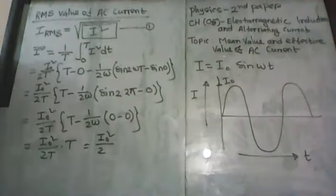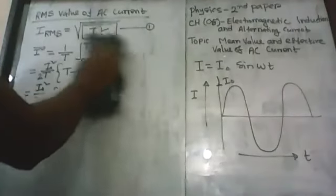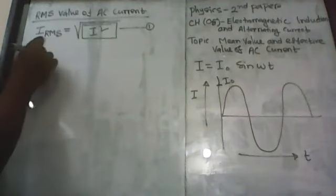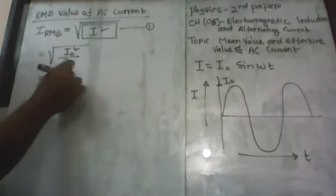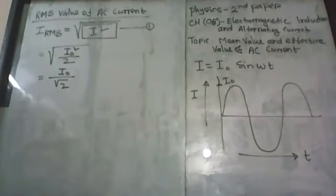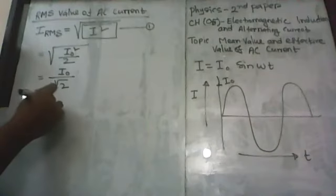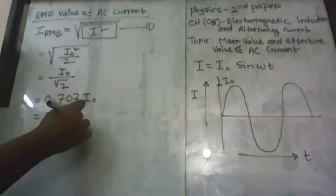If I use this value in equation number one, I can find the root mean square value of AC current. The RMS value = √(I₀²/2) = I₀/√2. The value of √2 equals 1.414, so 1/√2 equals 0.707. Therefore I_rms = 0.707 I₀ = 70.7% of I₀.